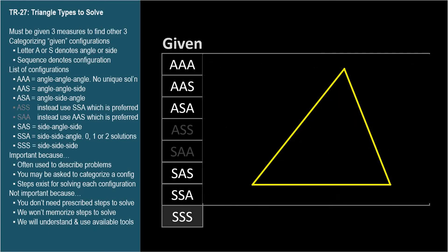SSS is side, side, side. We're given three sides but no angle. This triangle has a unique solution and is easy to solve.